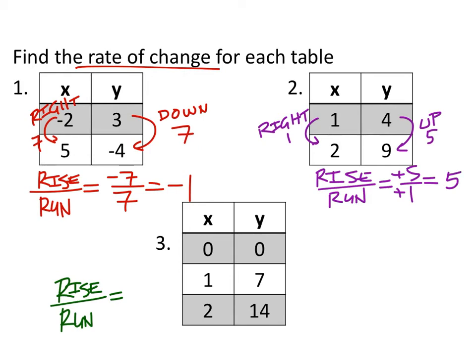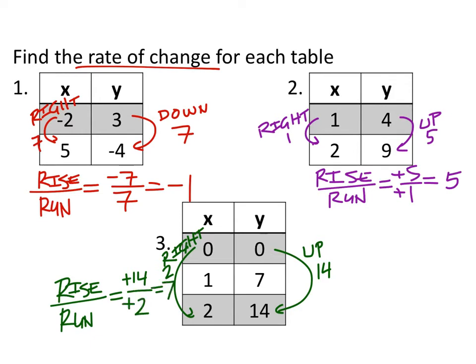Finally, we've got this other table, and this is what I would expect it to look like on a quiz — something with three or more points, so you get to choose which two points you want to use to figure out the rate of change. I'm going to use the two endpoints. From zero to fourteen in the y's, the rise is positive fourteen. The run goes from zero to two, which is to the right two. So that would be positive fourteen over positive two, which simplifies to seven.